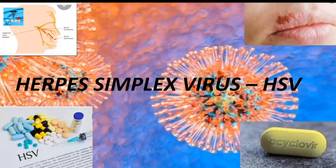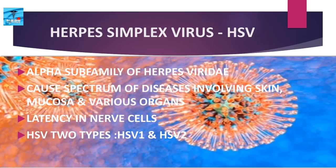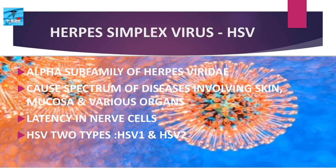This video is about Herpes Simplex Virus. It belongs to the alpha subfamily of the family Herpesviridae and occurs in a spectrum of diseases involving the skin, mucosa, and various organs. It undergoes latency in the nerve cells and reactivates later, causing recurrent lesions. Herpes Simplex Virus is of two distinct types: HSV1 and HSV2, which differ from each other in many aspects.